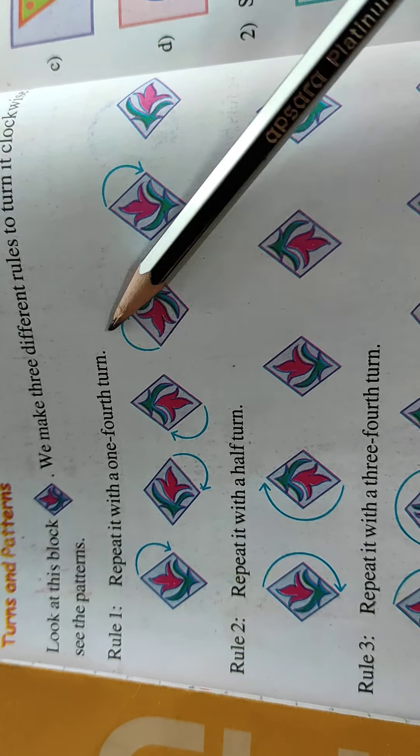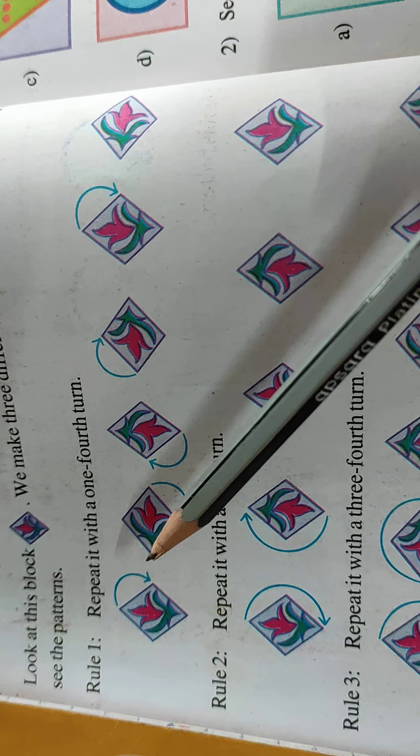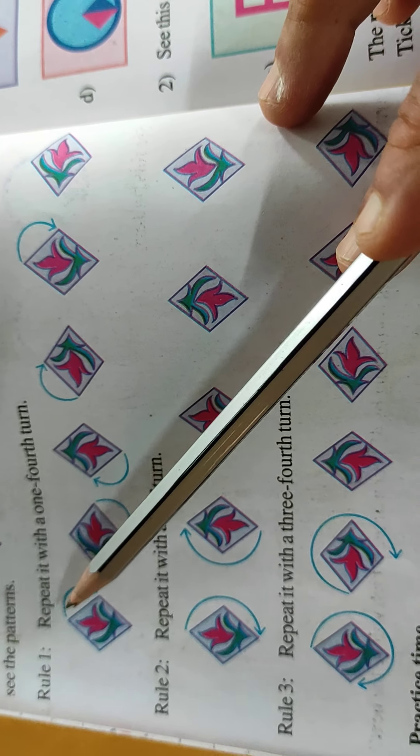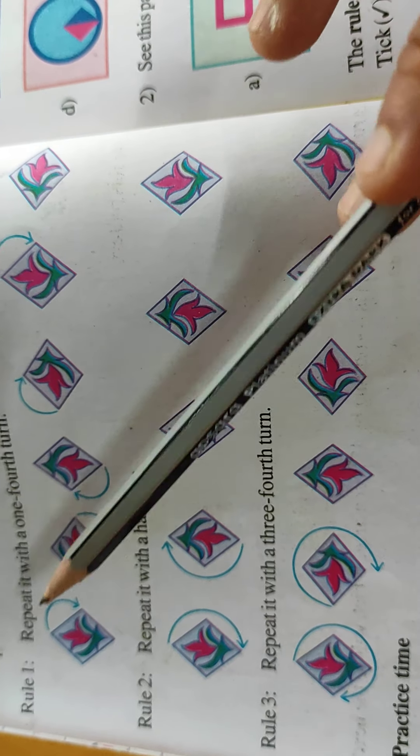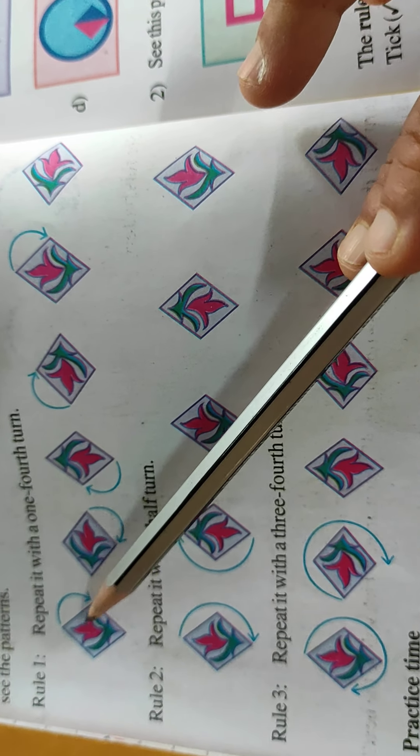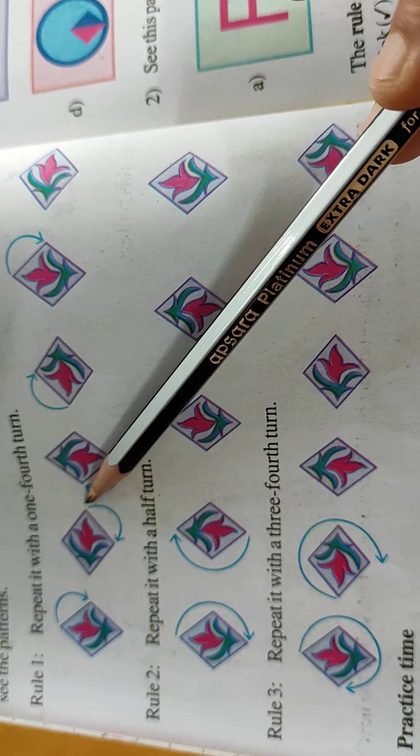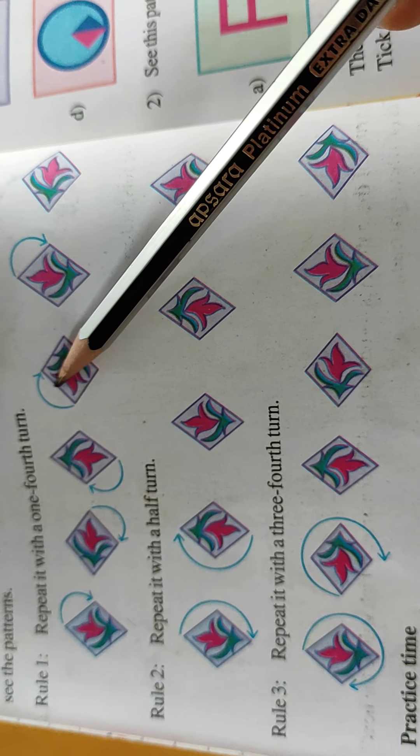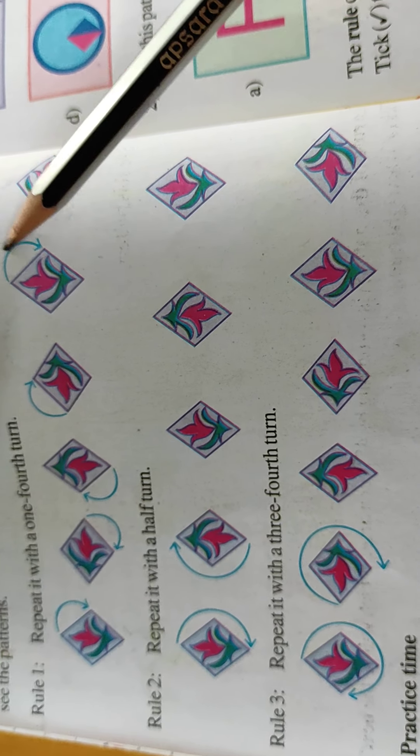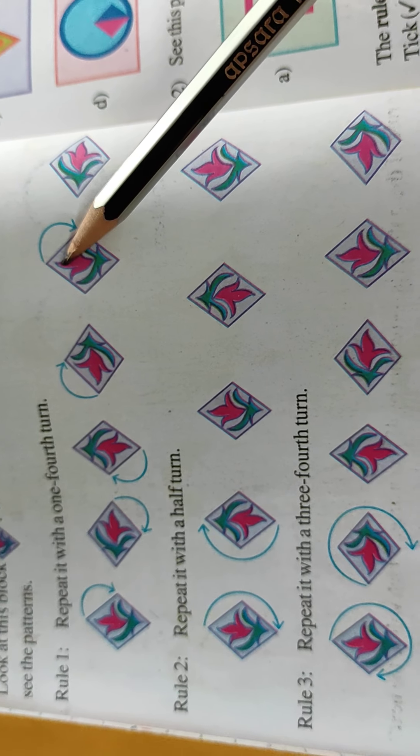See the pattern. Repeat it with a one-fourth turn. One-fourth turn we understood. Twelve to three, then six, nine. So see here, twelve. In the one-fourth turn, second, and the third-ward fourth. And again it will take first position.